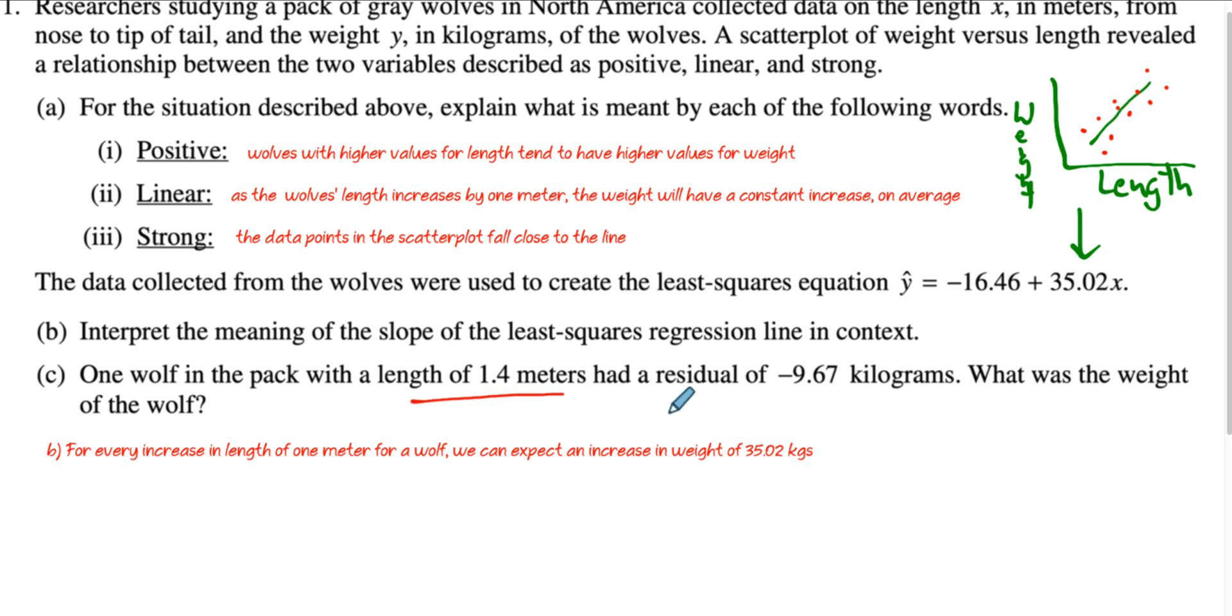However, this wolf had a residual of negative 9.67. So if you remember, a residual is the distance to the line. So if the distance is negative, that means that the point is under the line.